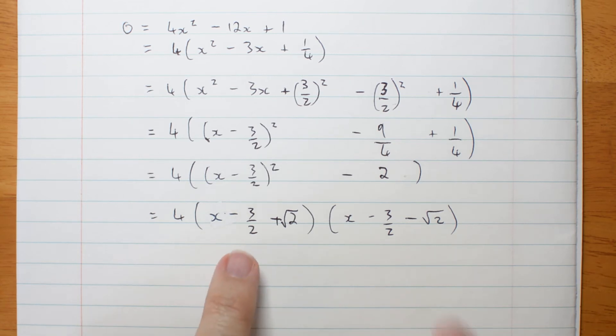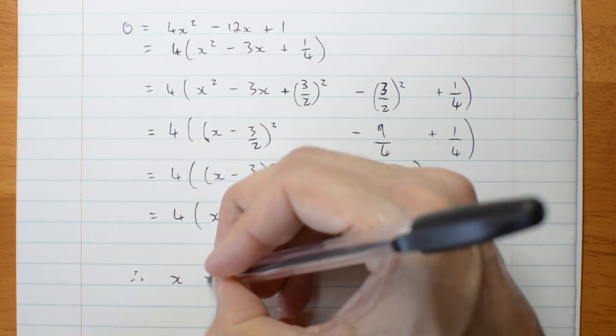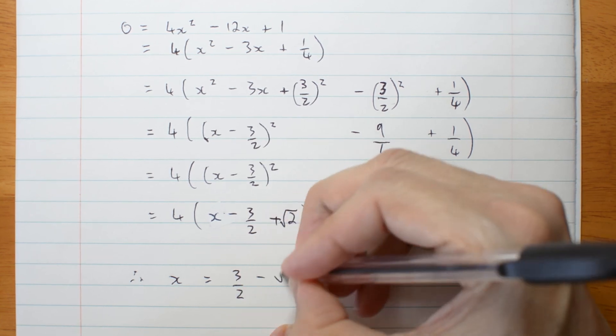OK. If I am solving this equal to 0, you can imagine this as minus. I'm going to go straight there. Therefore, x is either 3 on 2 minus root 2.